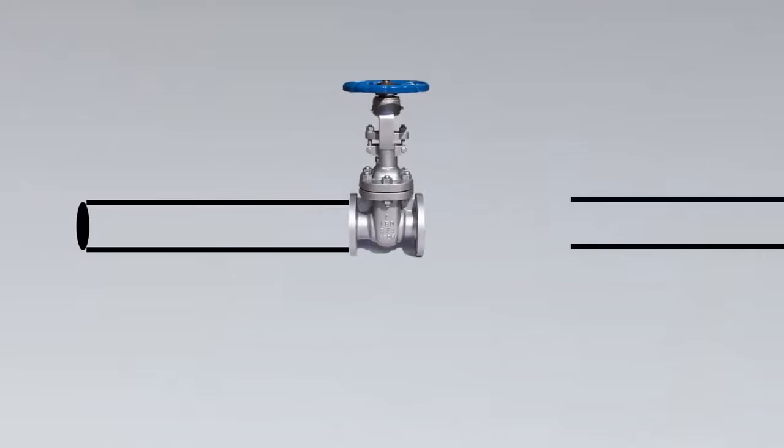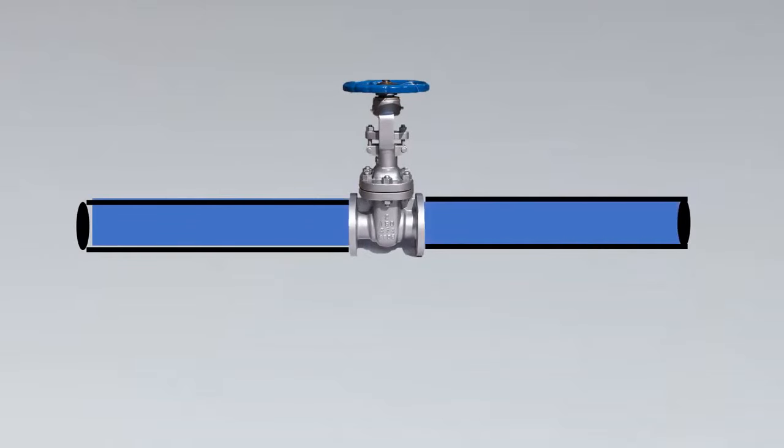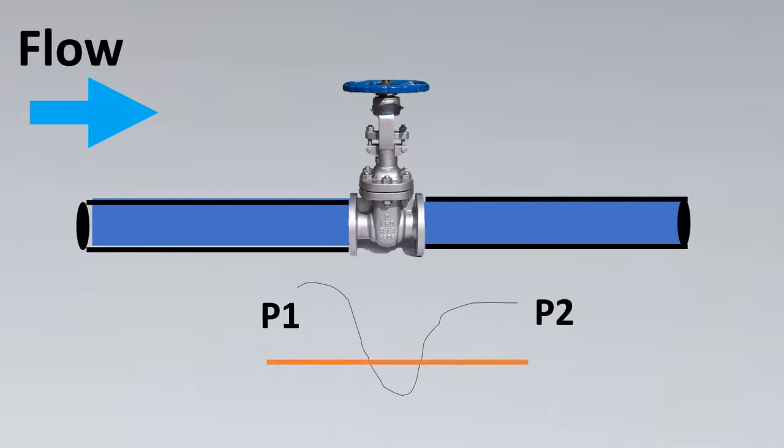What is cavitation and flashing? Imagine this is your valve put in a line. With the flow, there is some restriction, so you're going to have a DP or differential pressure created. The upstream pressure is P1 and the downstream pressure is P2. Now imagine that this is your vapor pressure curve.